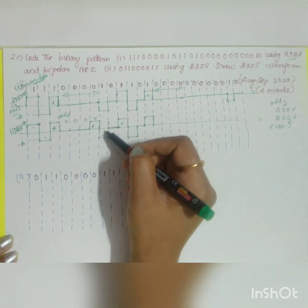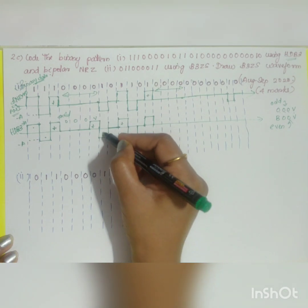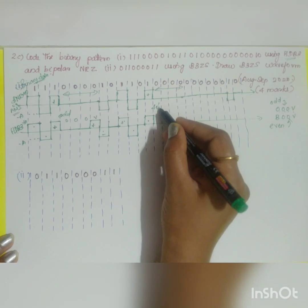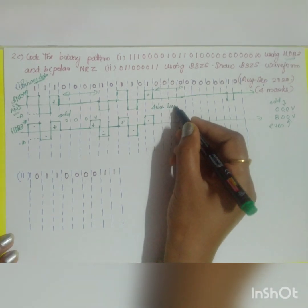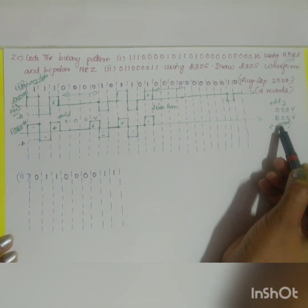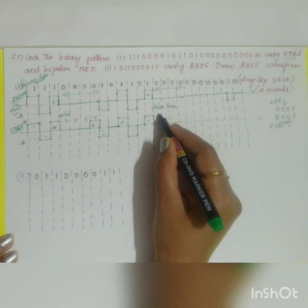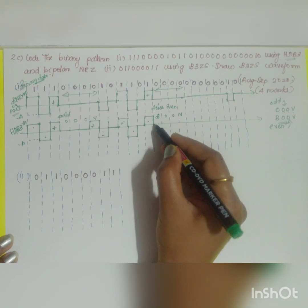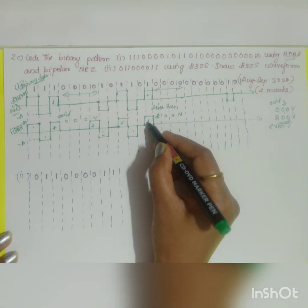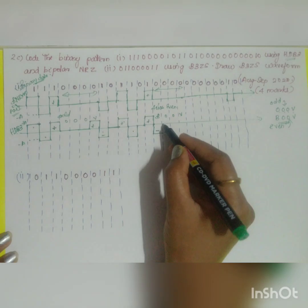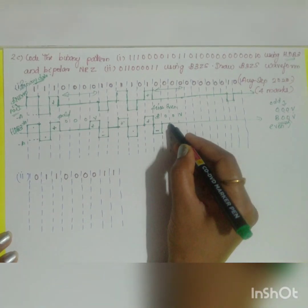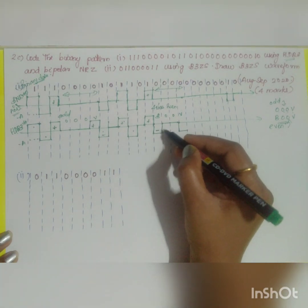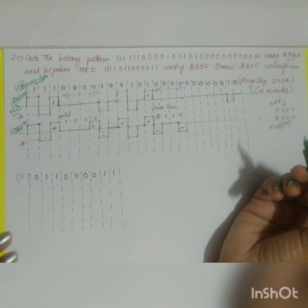After the violation, count the number of ones: 1, 2, 3, 4 — four ones, so it is even. When it is even, you replace by B00V. B means bipolar, so the B bit follows normal bipolar. The previous bit is positive, so here B will be negative. Then 0, 0, and the violation bit: since the previous one was negative, the violation is also negative, violating the bipolar rule.